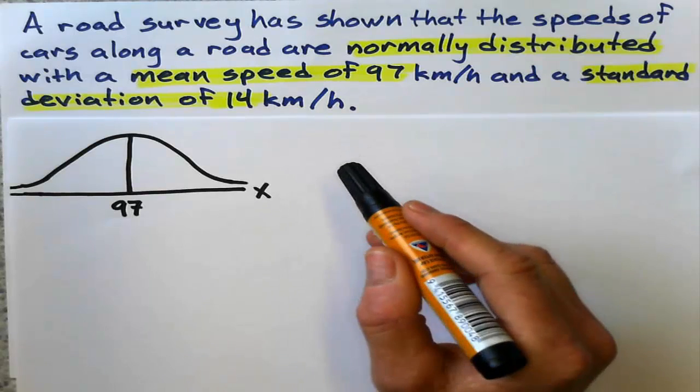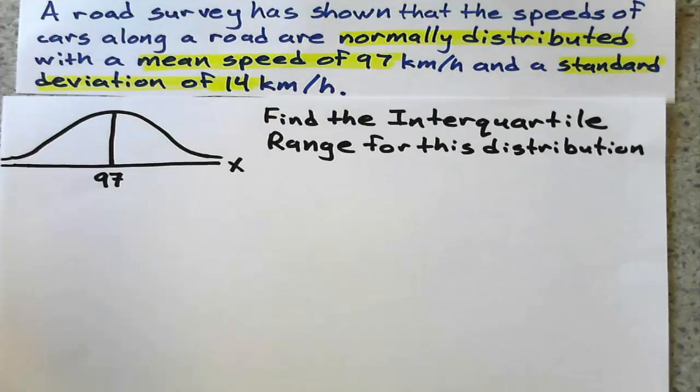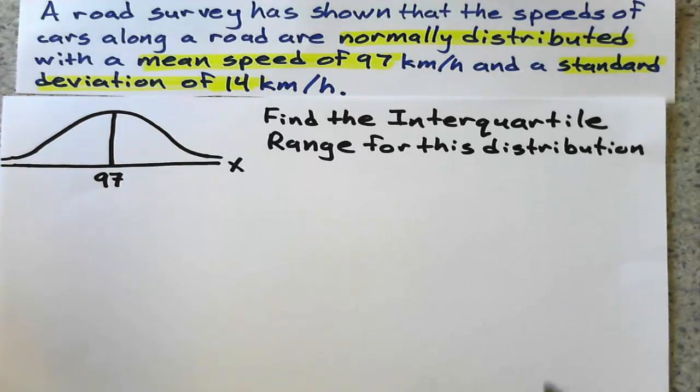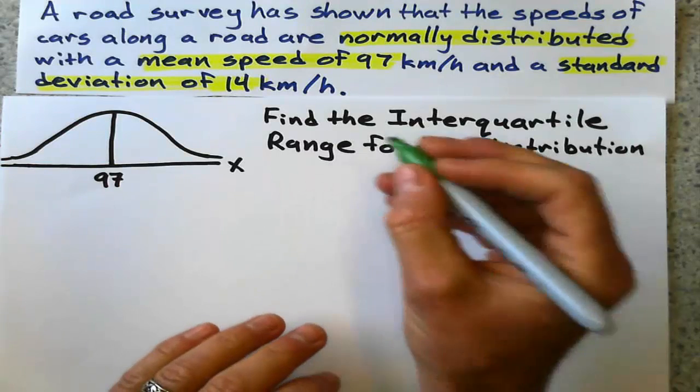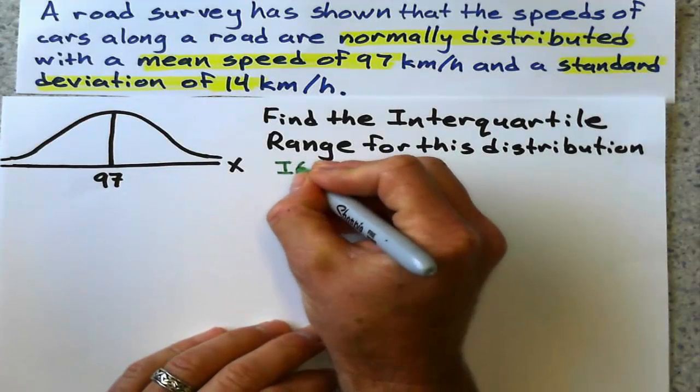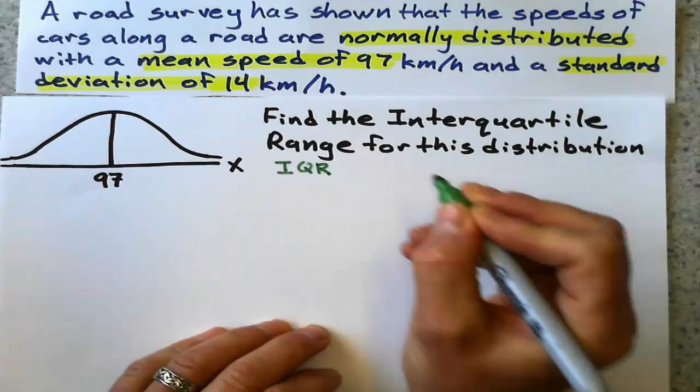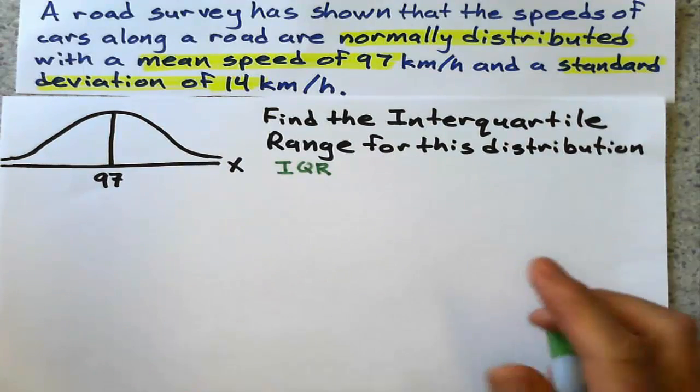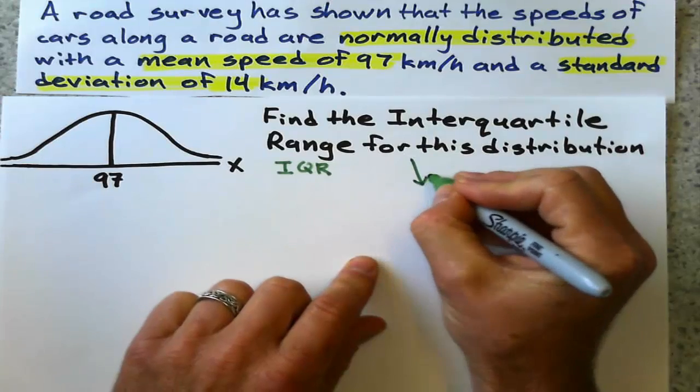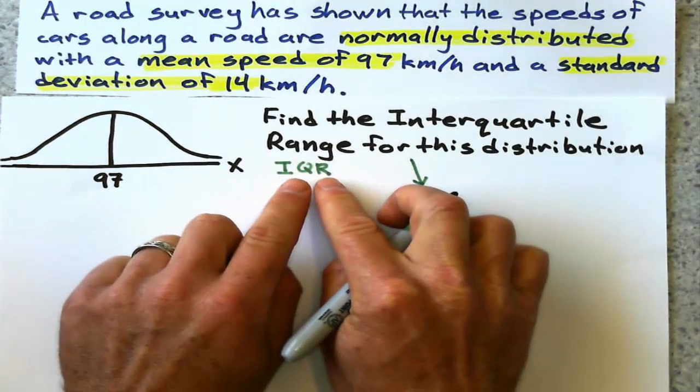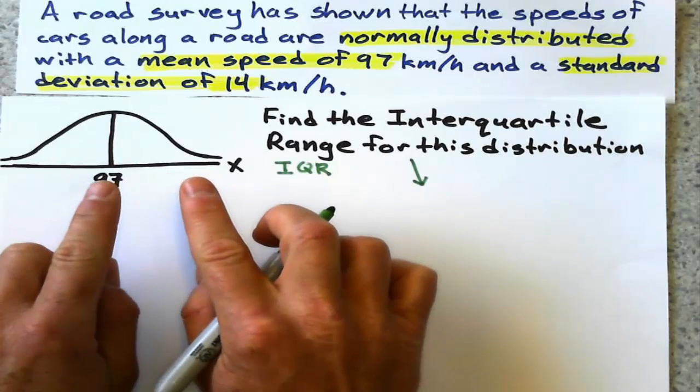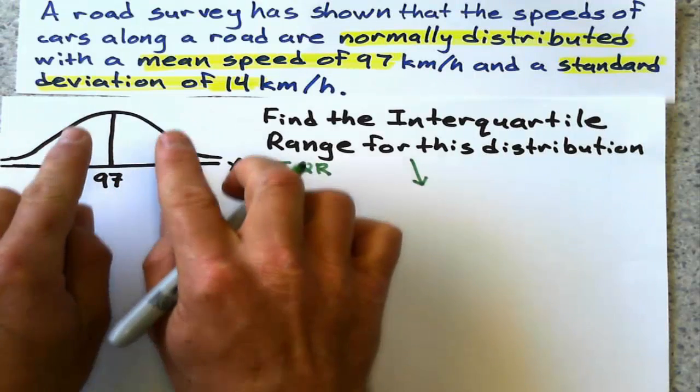Here's the question: Find the interquartile range for this distribution. Interquartile range is a big word, but what does this mean? It means the middle 50%, the middle 50% of the data.